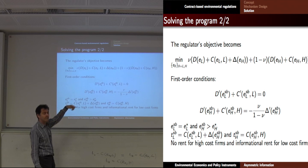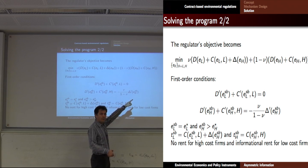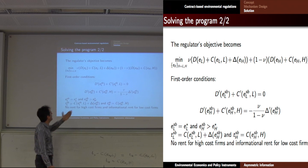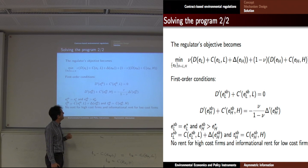The simplified objective has damage plus cost plus informational rent for the low-cost type — with probability mu — and damage plus cost for the high-cost type — with probability 1 minus mu. To get the solution, you take the derivative, set it equal to zero, and obtain the first-order conditions.